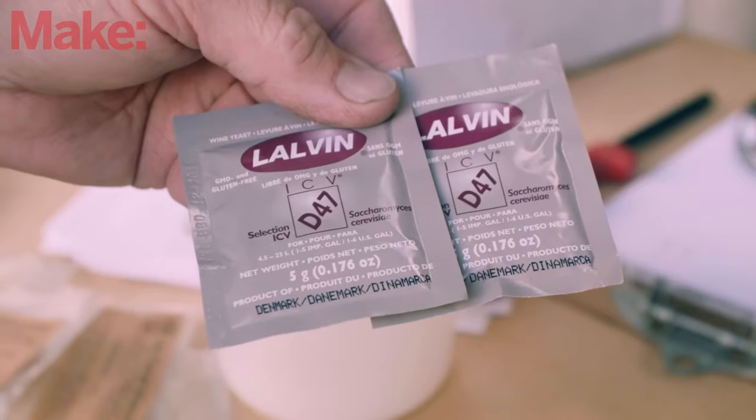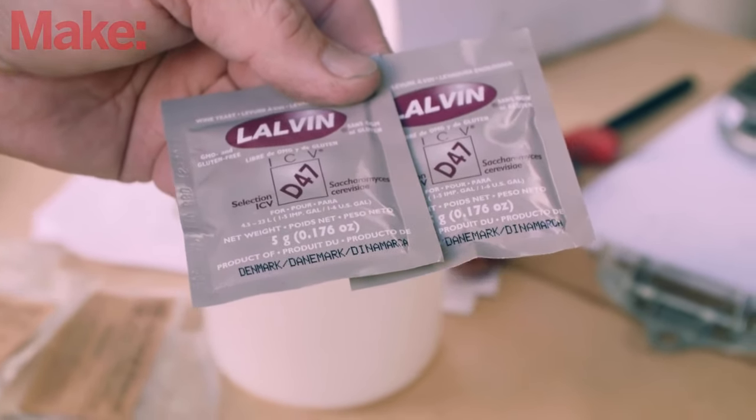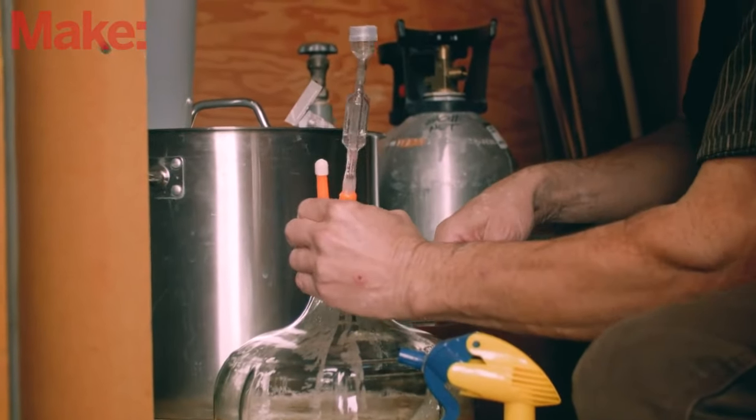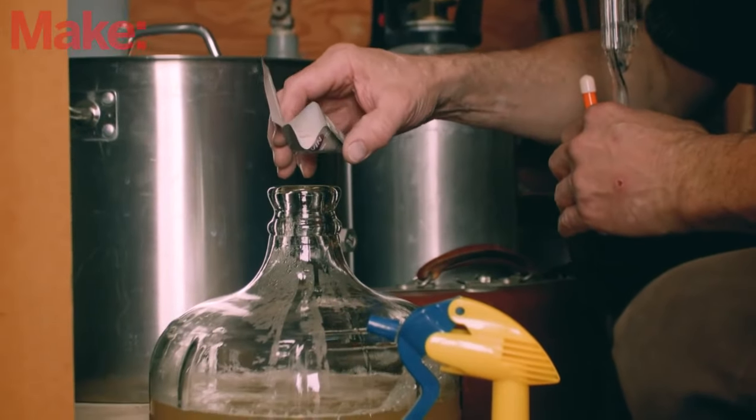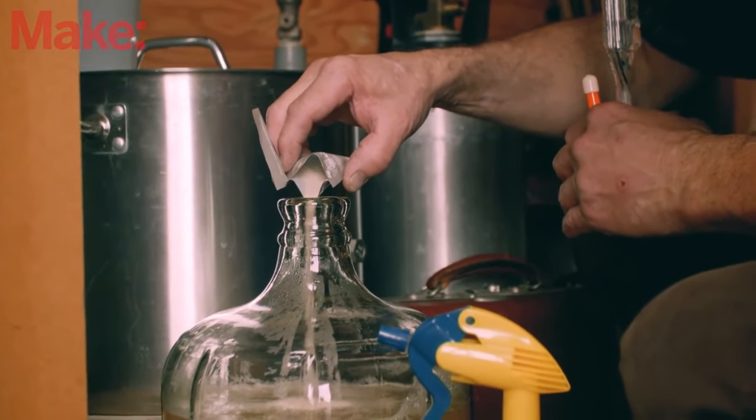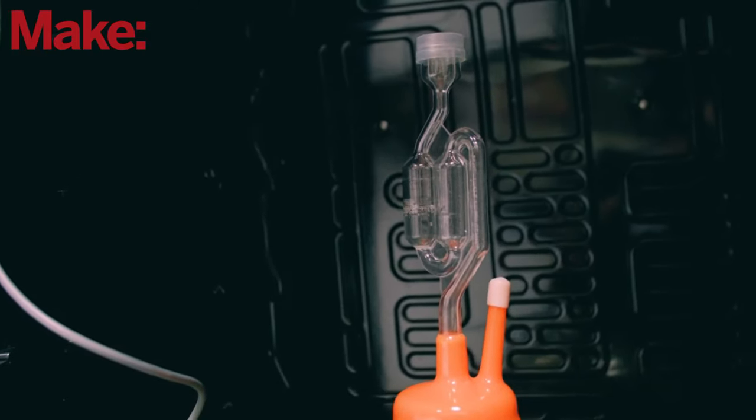After the 24 hours is up, take the two packets of Lavalin D47 yeast out of the refrigerator and let them warm up to room temperature. Take off the carboy cap, cut the tops off the yeast packets and slowly pour the yeast into the carboy, where it will dissolve over the next few hours. Within 24 to 48 hours, the batch should start bubbling, showing that the fermentation has started.